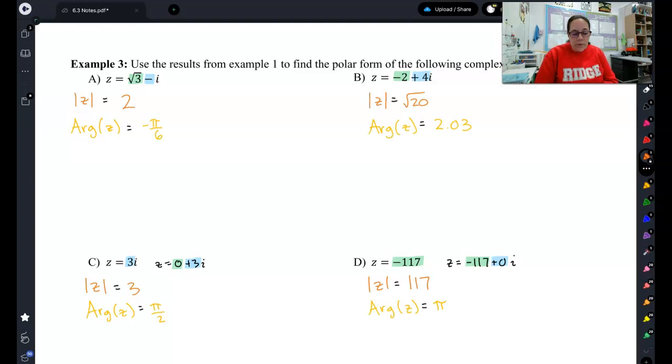Next, remember that the modulus is just another way of writing our r, and your principal argument is just another way of writing theta. So now that we have r and theta, or the modulus and the argument, we're going to write each of these as r cis theta.